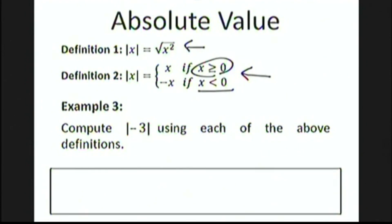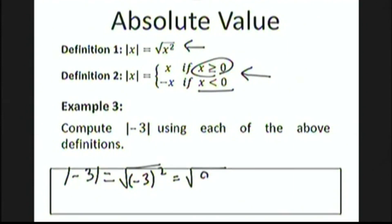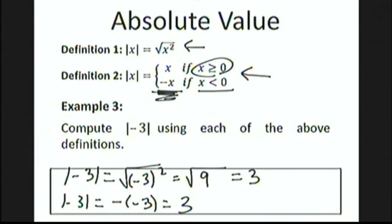Let's compute the absolute value of negative 3 using each definition. Using the square root definition, we take the square root of negative 3 squared. Negative 3 times itself — a negative times a negative is positive — gives us positive 9, and the square root of positive 9 is positive 3. Using the second definition, because negative 3 is a negative number, we take the negative of negative 3, which is positive 3. Hopefully this clarifies any confusion caused by the last part of that second definition.